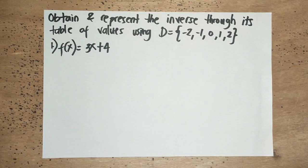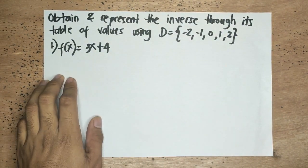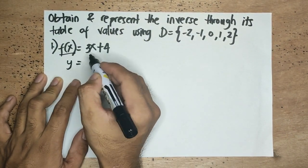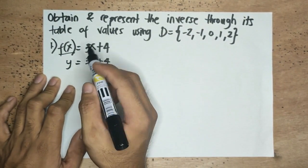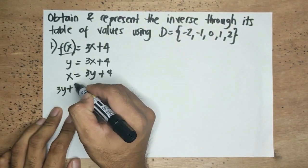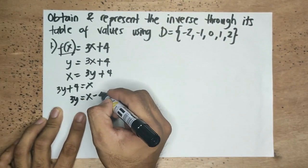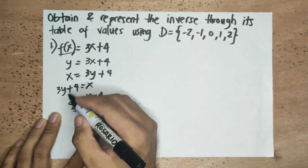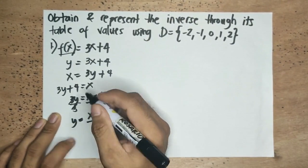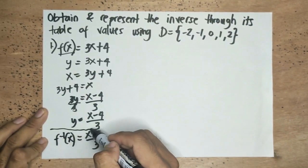In this example, we obtain and represent the inverse of the following one-to-one functions through its table of values using the domain negative two, negative one, zero, one, and two. First step: we write the function using y, so y is equal to three x plus four. Second step: we interchange the variables — y becomes x and x becomes y — giving us three y plus four is equal to x. Transposing the constant, positive four becomes negative four. Dividing both sides by three, we have f negative one of x is equal to x minus four all over three. This is our inverse.